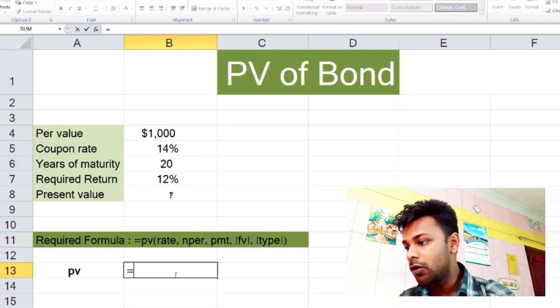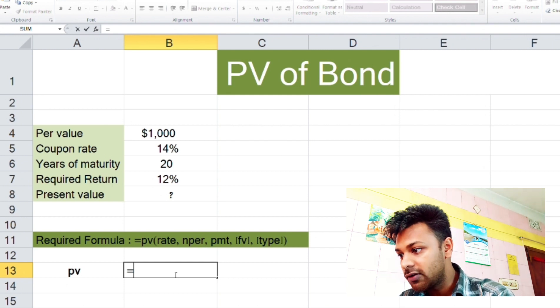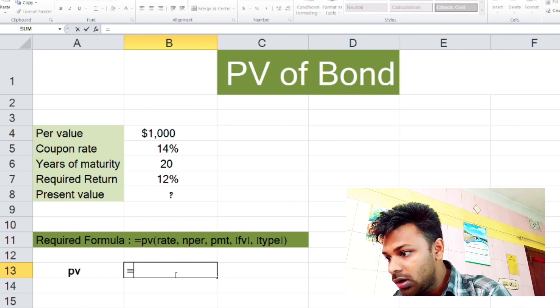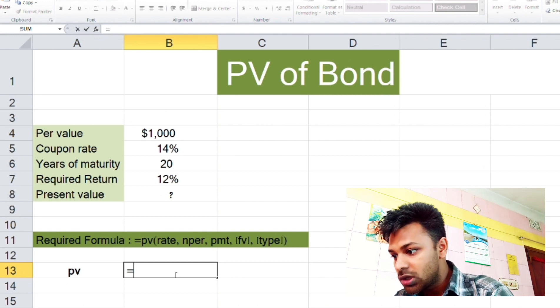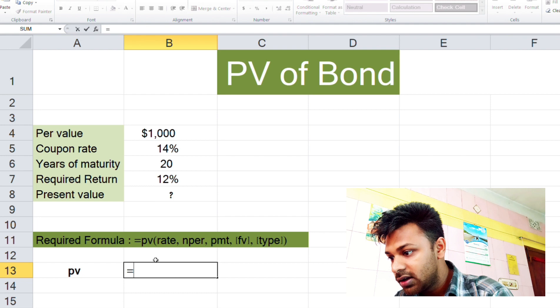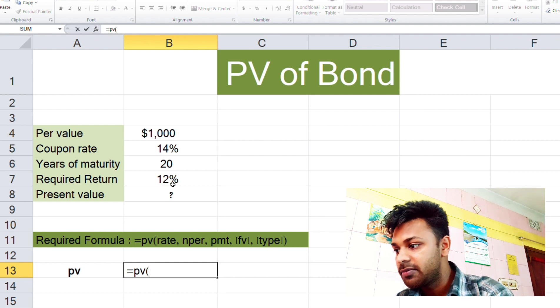To calculate the present value of bond, we have a formula. The formula is here, you can see. Okay, now we type the formula: first of all, equal sign, then PV, first bracket. And now we need rate. Rate means required return rate, like 12%. Click on it, comma.